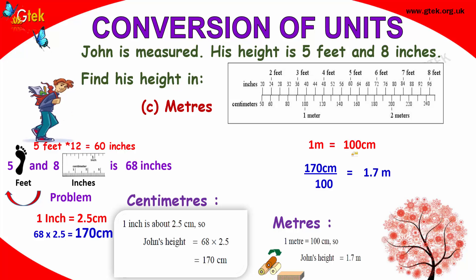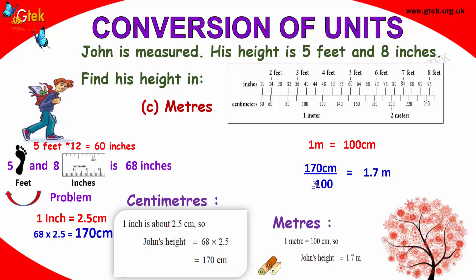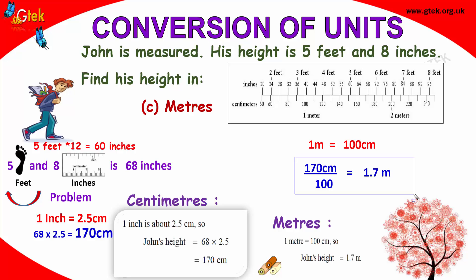If you want to convert your centimeters to meters, you need to divide by 100. So 170 centimeters divided by 100, you get the answer as 1.7 meters. John's height is 1.7 meters, which is the equivalent of 5 feet and 8 inches.